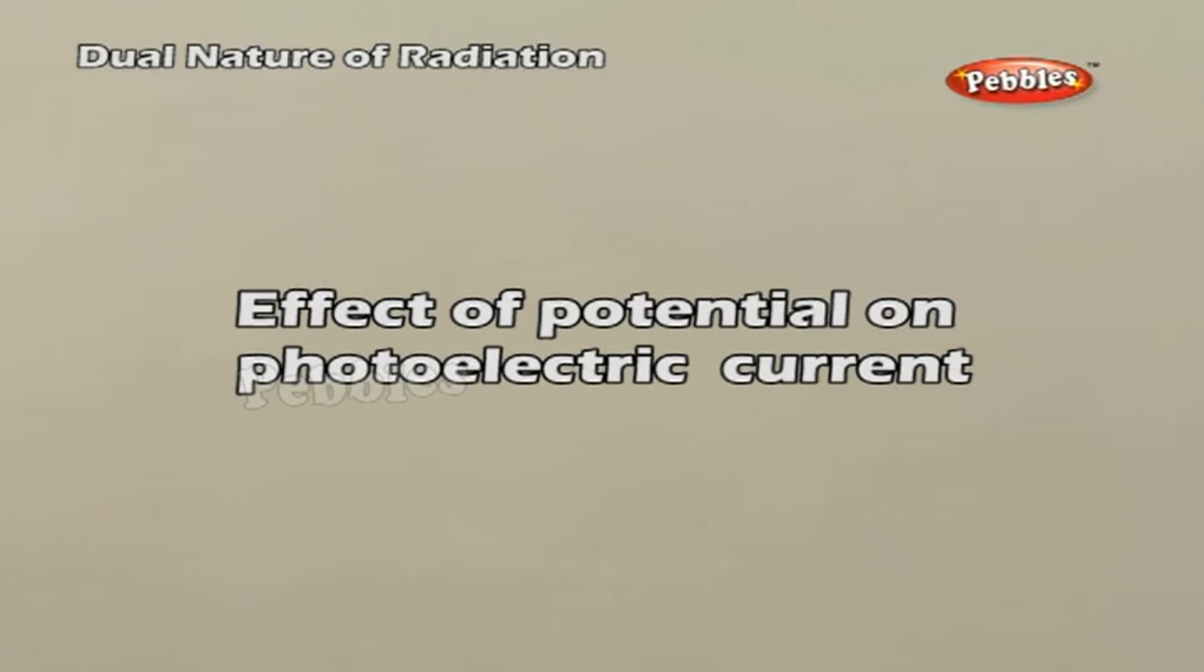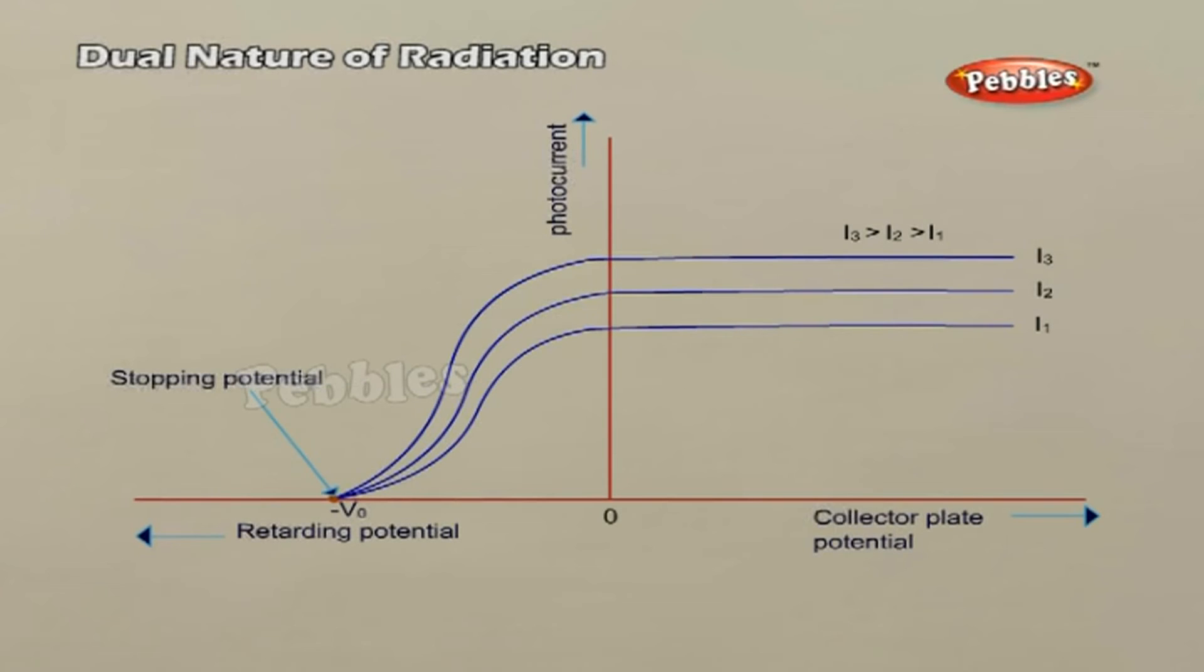Effect of potential on photoelectric current. We now repeat the experiment by varying the positive potential of plate A and measure the resulting photocurrent. It is found that the current increases with increase in positive potential. The maximum value of the photoelectric current beyond which no electron emission takes place is called saturation current. When we apply a negative potential to the plate A, the photocurrent is found to decrease rapidly and finally drops to zero.